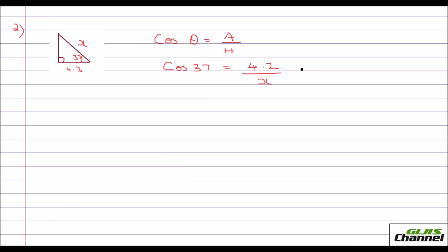Now, multiply both sides by x. So what happens? Cos 37 times x equals cos 37 times x equals, the x would go from here, you get 4.2.